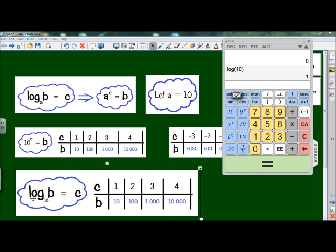What does it mean? Log to the base 10 of B is equal to C. So log to the base 10 of 10 is equal to 1. 10 to the power of 1 is equal to 10.